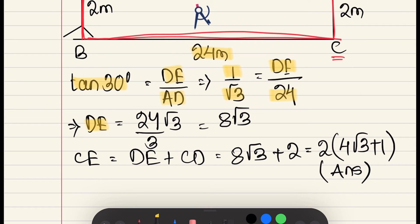Which is 1 by root 3 is equal to DE divided by 24. So, DE is equal to 24 divided by root 3.